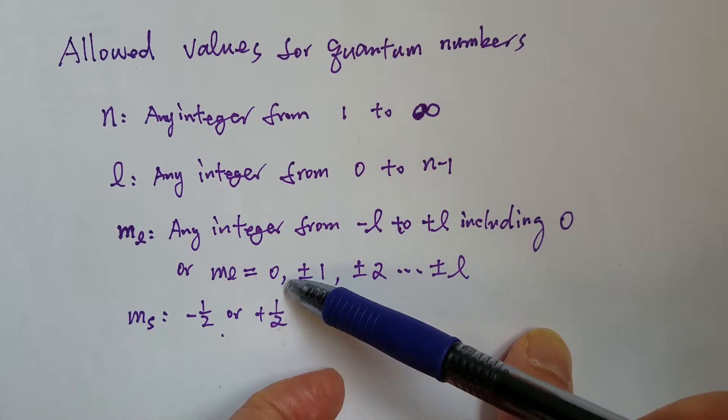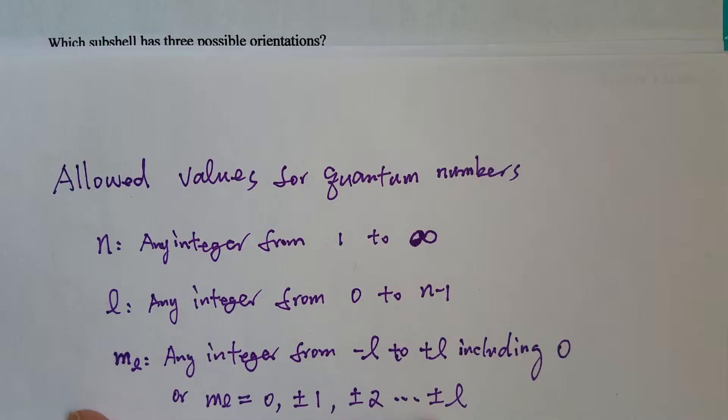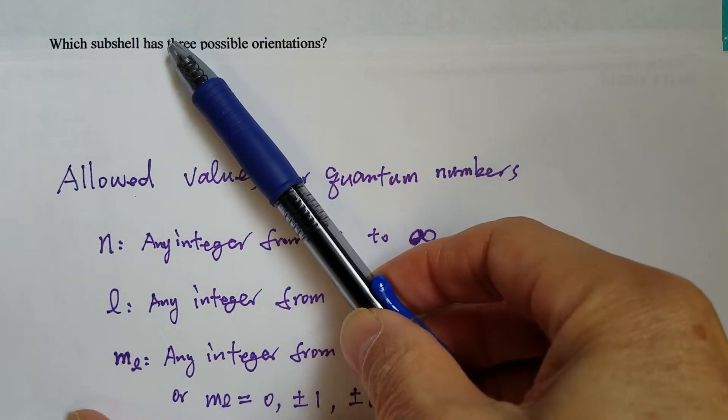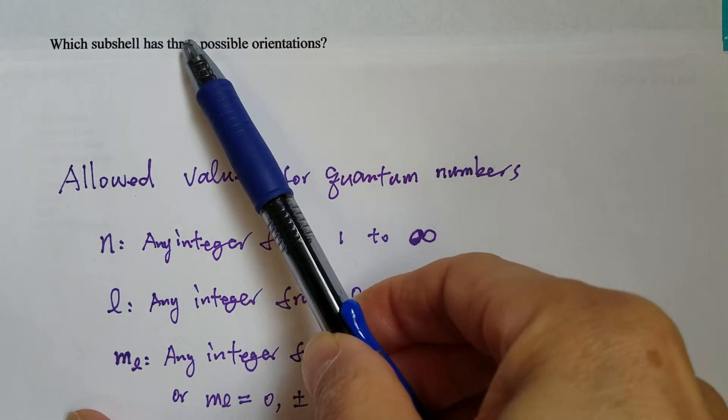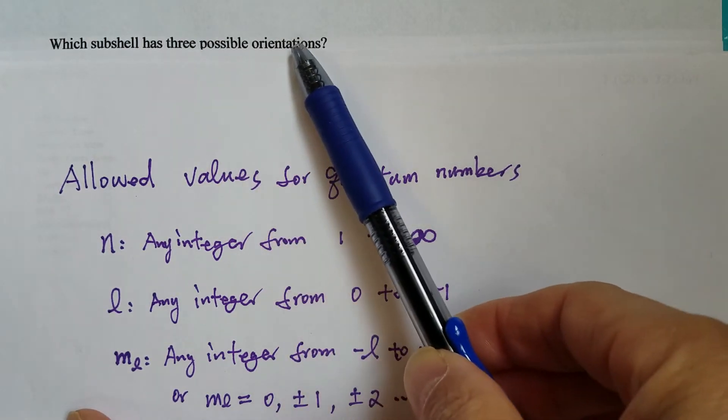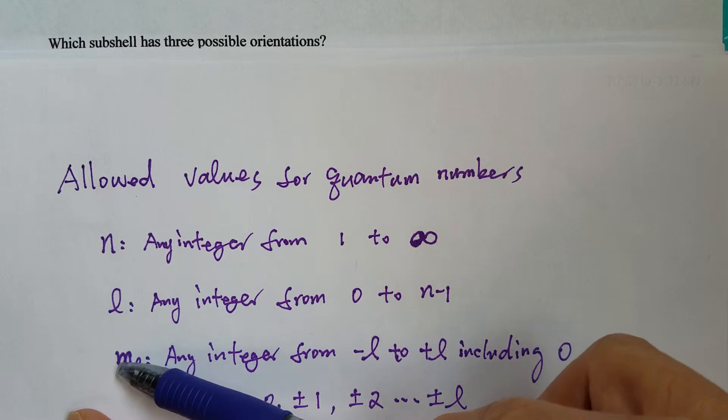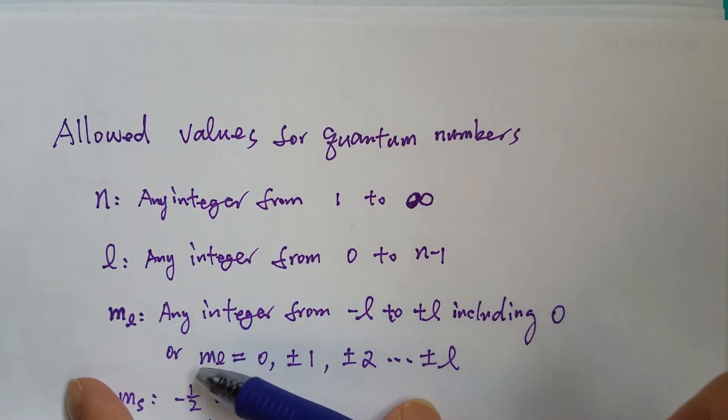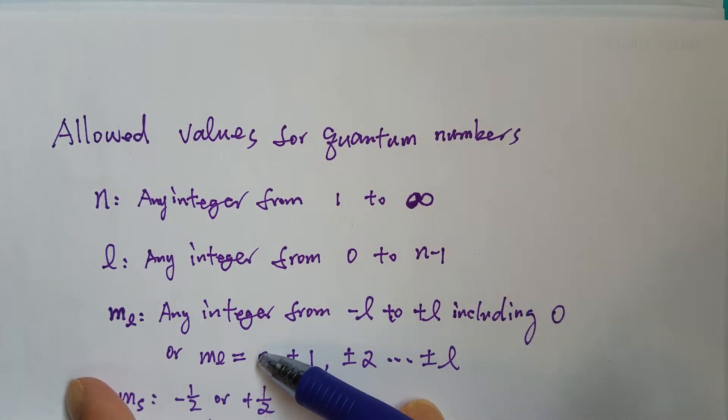So in this case, we already know in this question the number of ML values should be three, because three possible orientations means three orbitals. Three orbitals means three ML values. If there are three ML values, then first you have to have the zero, then plus minus one. That's three.